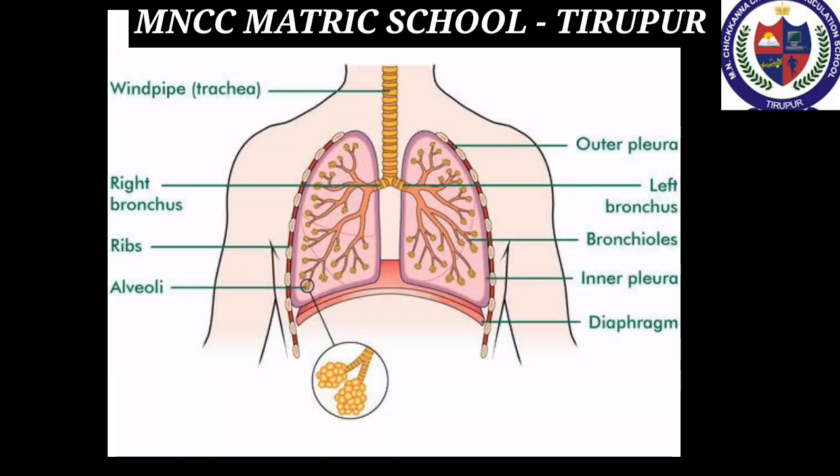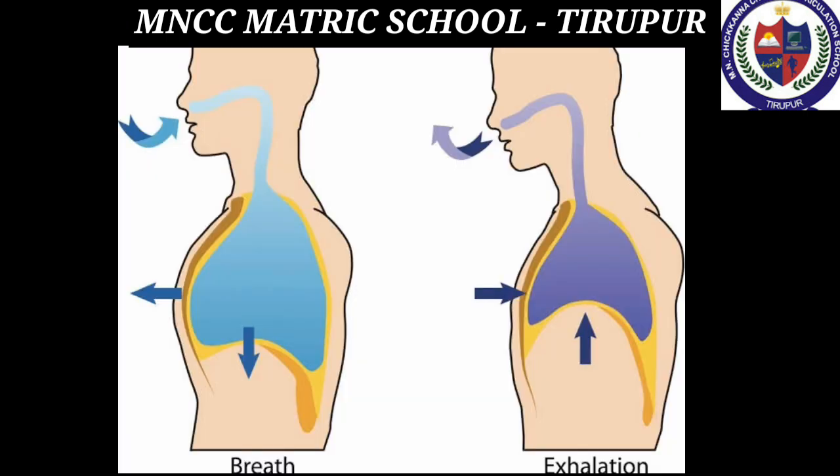The next important organ is the lungs. They are a pair of spongy, sac-like organs located in the chest region that help us to breathe. When we breathe in, we intake oxygen from the air through the nose and pass it to the lungs — the lungs expand and become big. This process is called inhalation.